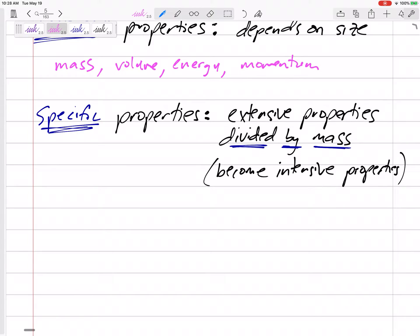For example, specific volume, lowercase v - we'll call this specific volume - is uppercase V, the volume divided by the mass. So we can compare specific volumes. It doesn't matter if I've got a little, I've got a lot, we're dividing it by the mass.